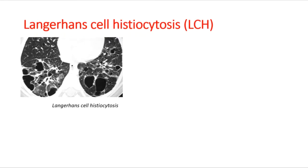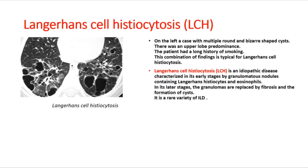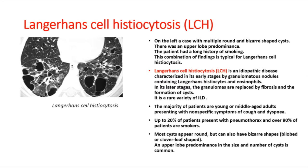A case with multiple round and bizarre-shaped cysts with upper lobe predominance in a long-term smoker is typical for Langerhans cell histiocytosis (LCH). LCH is an idiopathic disease characterized in early stages by granulomatous nodules containing Langerhans histiocytes and eosinophils; later stages show fibrosis and cyst formation. It is a rare ILD affecting mostly young or middle-aged adults with non-specific cough and dyspnea. Up to 20% present with pneumothorax; over 90% are smokers. Cysts can be round or bizarre-shaped (violet/clover leaf), with upper lobe predominance.